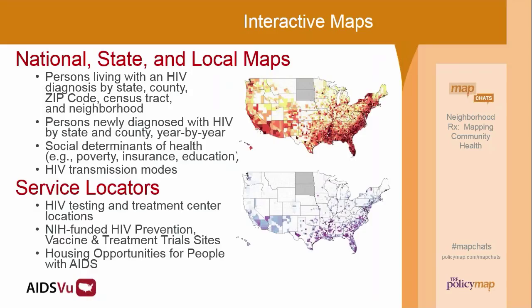Our site is primarily built around interactive maps. These illustrate people living with HIV at the state level, at the county level, and in cities down to the zip code, census tract, or neighborhood level. I'm going to talk about how this information can be used to improve our services and make sure we're aligning resources with the areas of greatest need. We also present data on people newly diagnosed with HIV at the state and county level, and I'll be showing some examples of putting these data side-by-side with social determinants of health.